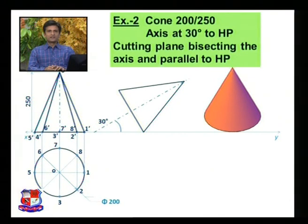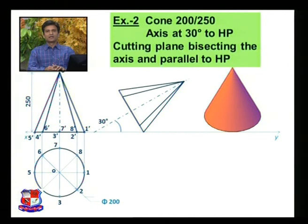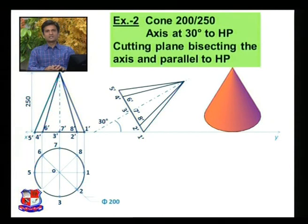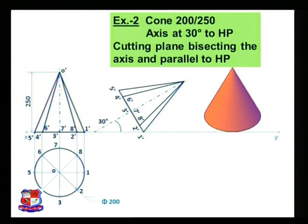Join all these dash points to the apex point O and transfer all these points to the inclined cone or inclined triangle. Name the end points 1 dash, 2 dash, 3 dash, 4 dash, 5 dash, 6 dash, 7 dash, and 8 dash. Both triangles have the same dimensions, but the second triangle has its axis making an angle of 30 degrees with the XY line.